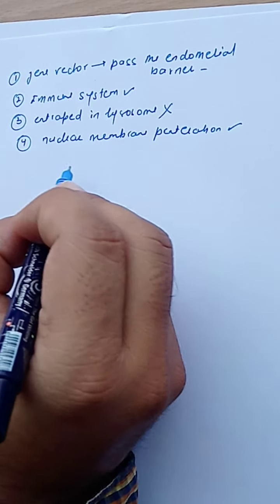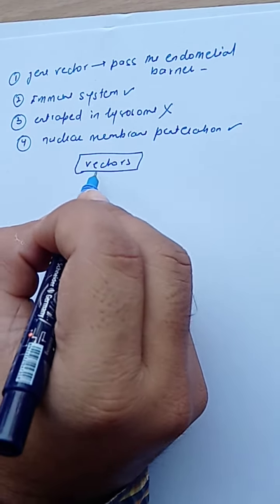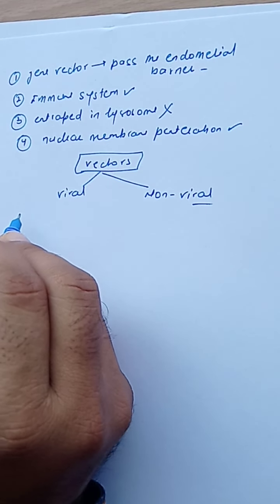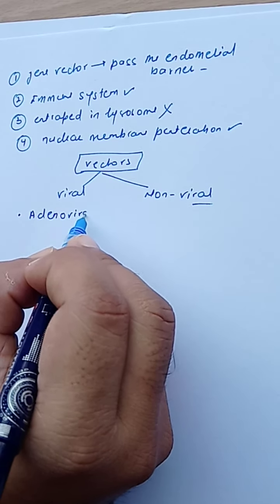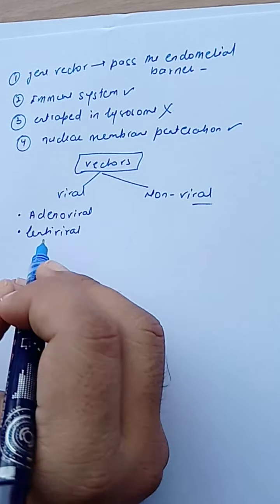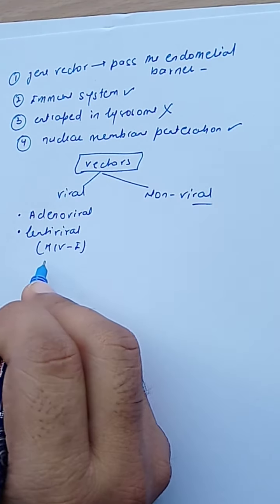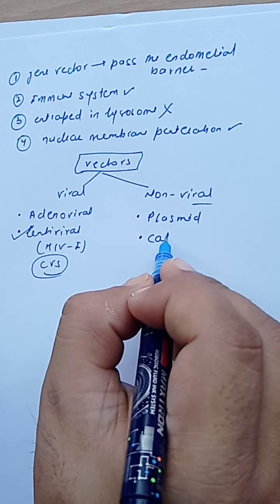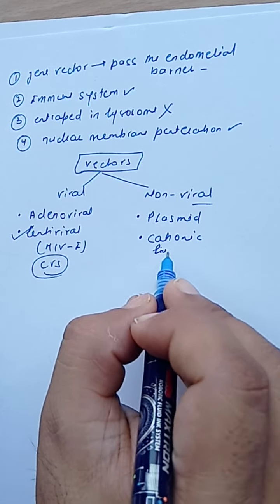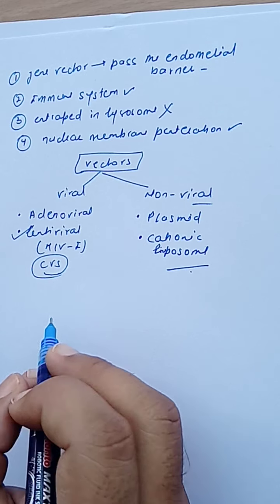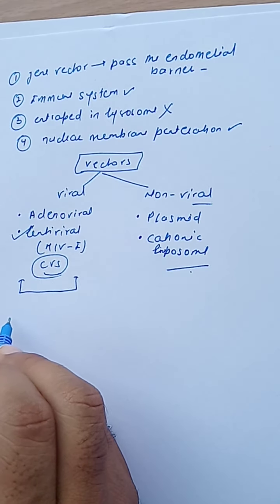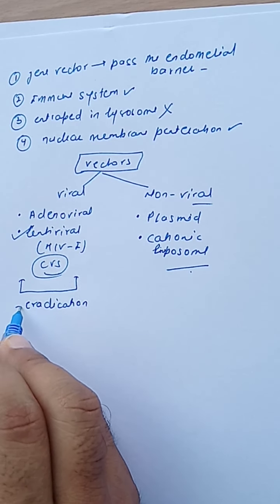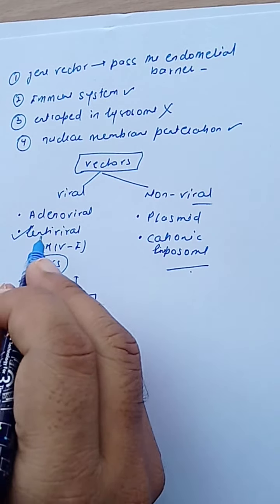There are two types of vectors used in gene therapy: viral and non-viral. Viral vectors include adenoviral and lentiviral vectors — HIV-1 is used particularly for CVS. Non-viral vectors include plasmids and cationic liposomes. A problem with viral vectors is the risk of eradication of latent human sequences, and there is also a chance of mutation which can lead to sickle cell disease.